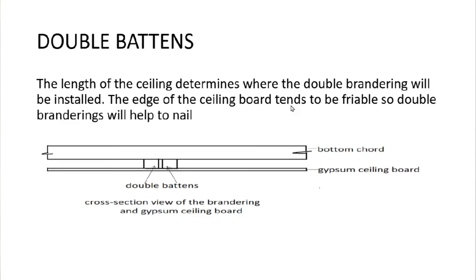Double brandering: the length of the ceiling determines where double brandering will be installed. The edge of the ceiling board tends to be free, so double brandering helps to nail it. Double brandering is only placed where two ceiling boards will meet.